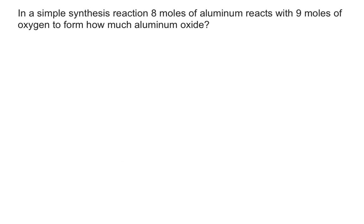This right here is more akin to what you're going to see in class. So in a simple synthesis reaction, eight moles of aluminum reacts with nine moles of oxygen to form how much aluminum oxide? Now at first glance, you might look at this problem and say, there's no way I can do it. Well, like every stoichiometry problem, and again, limiting reactants are just a simplified stoichiometry problem, you start out with a balanced chemical equation.